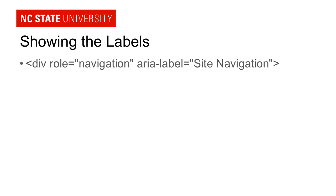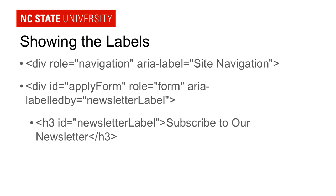What this tool will do is show you on screen how each of the different landmark regions are labeled. In this case it would show me that this landmark has the role 'navigation' and its label is 'site navigation.' Additionally, if you use the ARIA labeled by attribute to label a landmark with another element on the page, the tool will also look up what that element is and display that text. For instance, it will show me that I have a landmark of 'form' and the label for that form is 'subscribe to our newsletter.'